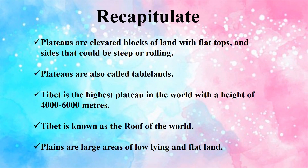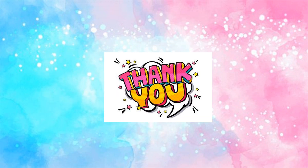It's time to recall what we learnt in this chapter. Plateaus are elevated blocks of land with flat tops and sides that could be steep or rolling. Plateaus are also called table lands. Tibet is the highest plateau in the world with a height of 4000 to 6000 meters and is known as the roof of the world. Plains are large areas of low-lying and flat land. Hope you enjoyed the class, and I think you are crystal clear with the major landforms of the earth. Thank you, children.